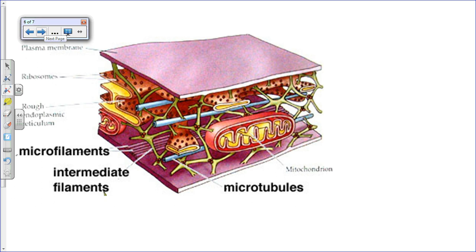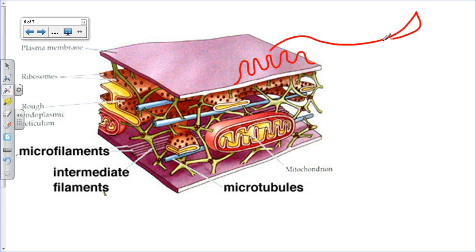The cytoskeleton provides an internal structural framework for the cell. In cross-section you can see mitochondria, ER, and the cytoskeleton components supporting the cell. It is called the cytoskeleton because it provides cytoplasmic support. It can also push outward to form cilia — small finger-like projections — or flagella, which are long whip-like tails for cell movement.